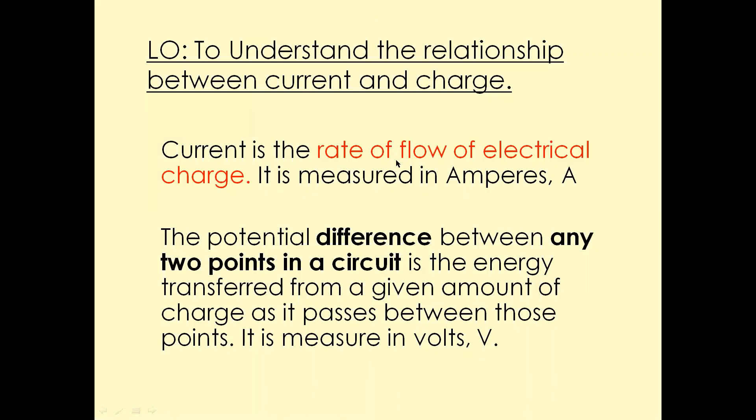Current is the rate of flow of electrical charge. That charge could either be electrons or ions. If it's a metal, then it's the flow of electrons. If it's an ionic compound, that's a flow of ions. So current is the rate of flow of electrical charge, could be electrons, could be ions. Very important one mark question in the exam. It is measured in amperes. Symbol is A.